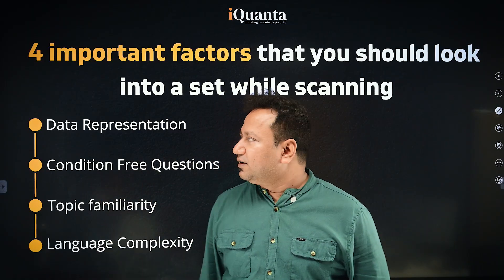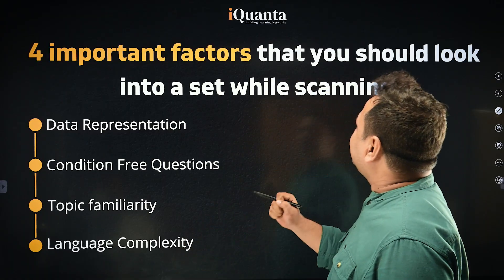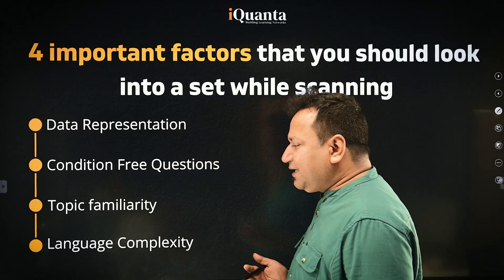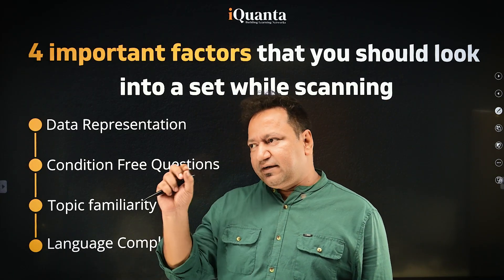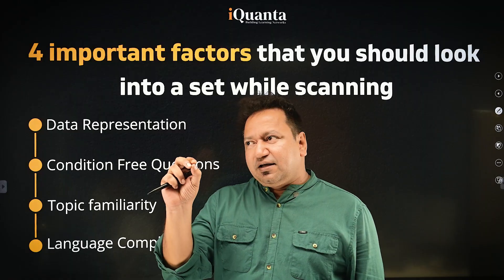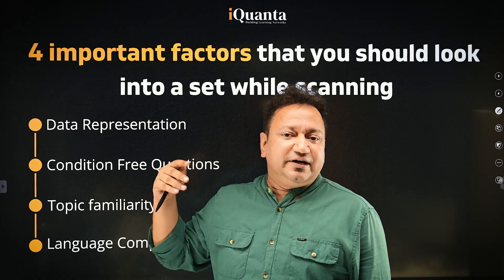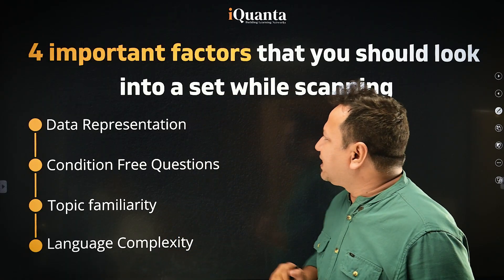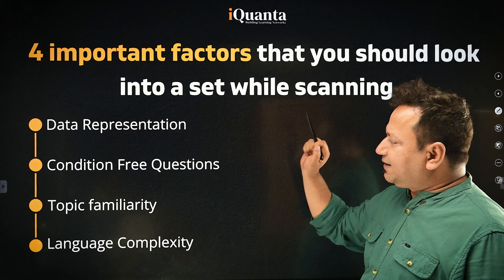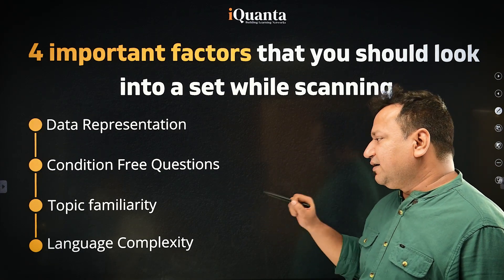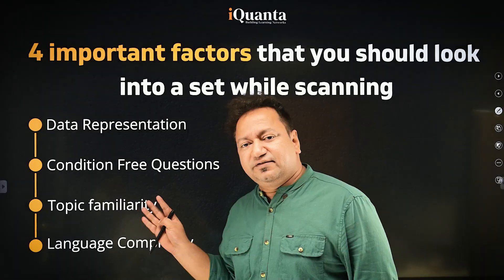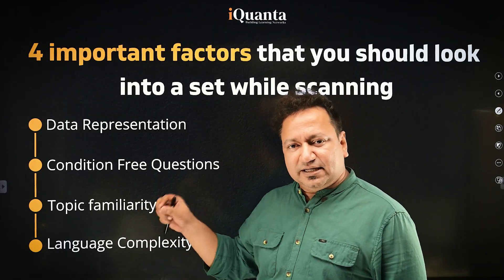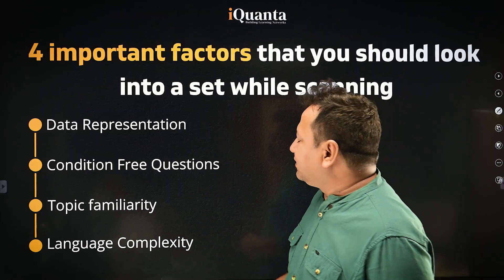You want to do 25 to 30 more, so what needs to be done? There are four important factors you should look into while scanning a set. Scanning is the act of looking at the paper, looking at the questions and sets — you cannot afford wasting a lot of time there. In the first one to two minutes you need to scan it. The four parameters are: data representation, condition-free questions, topic familiarity, and language complexity.